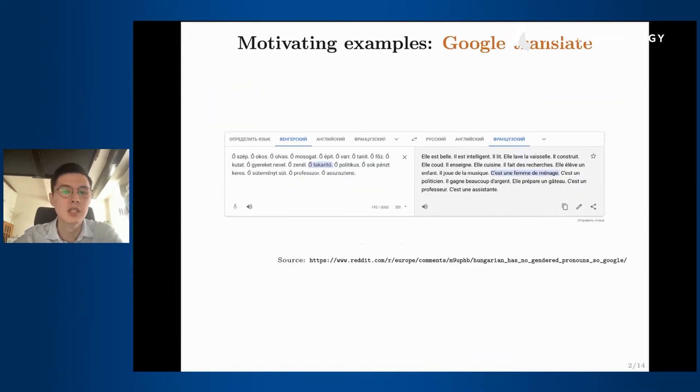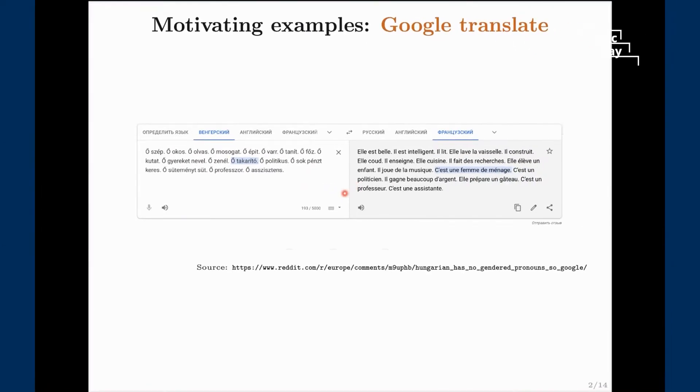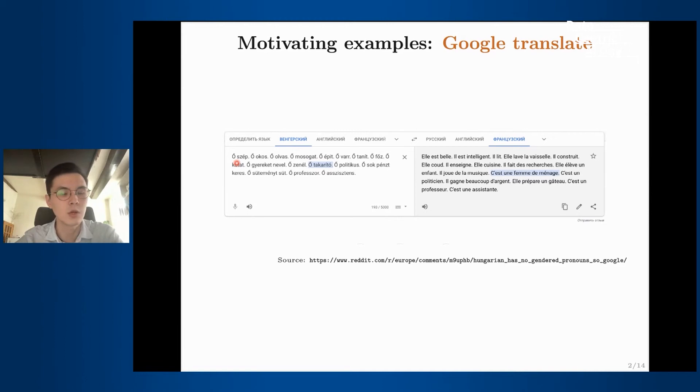The first one is the example of Google Translate. Here I'm translating from Hungarian to French. In Hungarian there is no gender pronoun, they don't have a word for he or she. Instead they have this letter with two accents which roughly means the person. We are translating pretty much the same sentences: the person does something or the person has certain qualities.